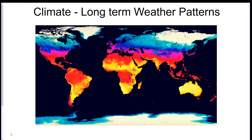First of all, climate. That's what this is going to be mainly about. Climate is the long-term weather pattern of an area. Generally, areas near the equator are going to be warmer with more moisture, and at the north and south poles you're going to get colder and drier conditions on land, with moisture mainly over water. This is over a very long period of time — maybe 10, 15, or 100 years.